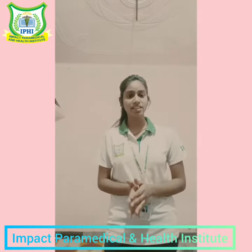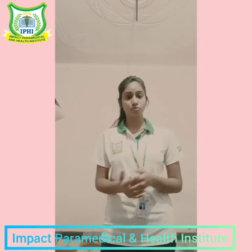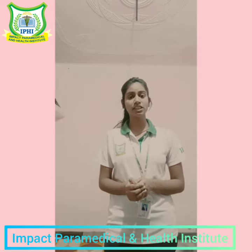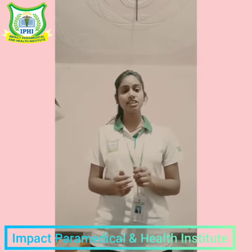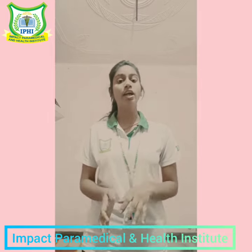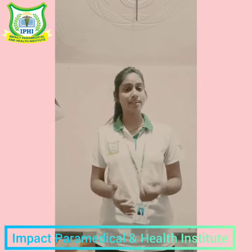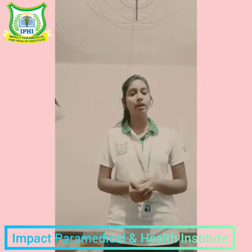In 1977, WHO defined blindness as the patient's vision being less than 3/60 according to the Snellen chart. If vision falls below this level, we say the patient is blind.